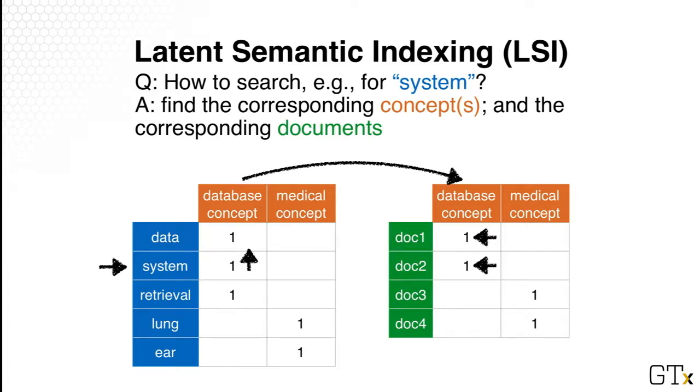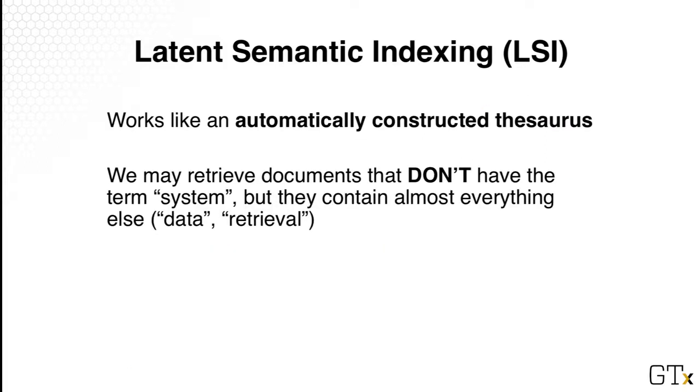And then we jump to the second matrix, and using our intermediate result, so database concept is what we're interested in, we retrieve the documents that are most associated with that concept. And what that means is LSI works more or less like an automatically constructed thesaurus. And it's very powerful in that we can retrieve documents that don't even include the word system, but contain almost everything else.